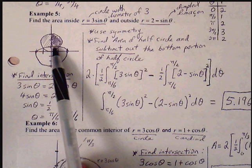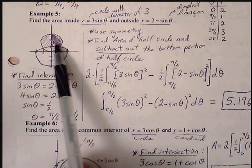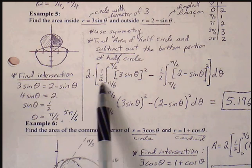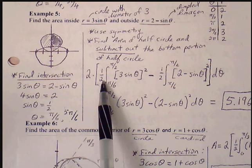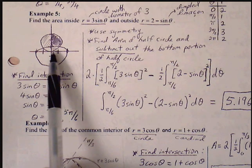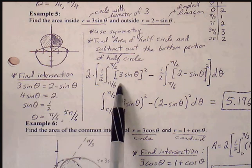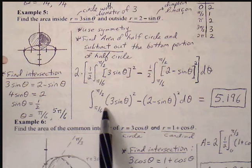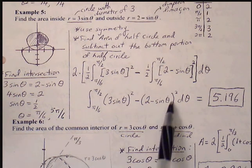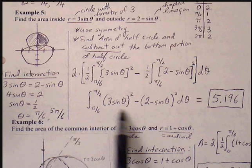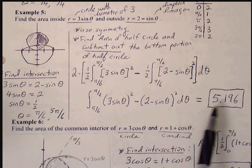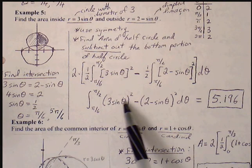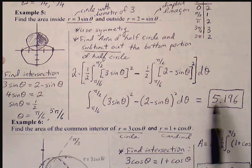That only produces half the area, so we double it — that's why there's a factor of 2 out front. The first integral captures the half circle and the second subtracts the limaçon portion. Since they share the same bounds, we combine everything: the 2 and one half cancel, leaving us with the integral of (3 sine theta) squared minus (2 minus sine theta) squared. Using the calculator with power-reducing, we get an area of 5.196.